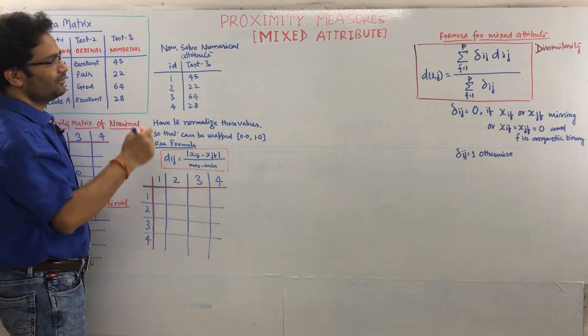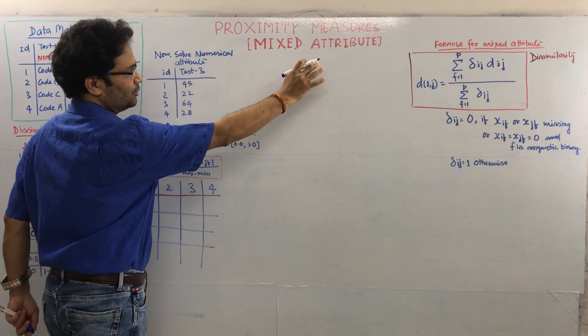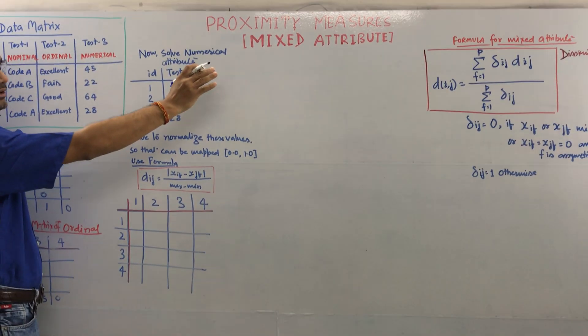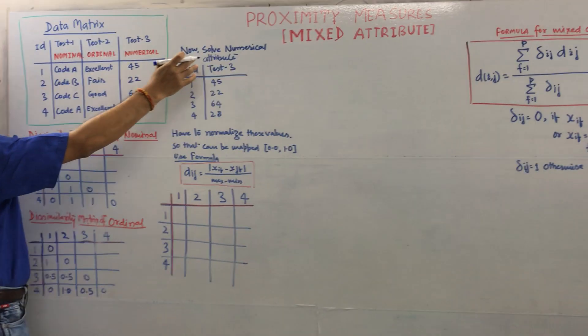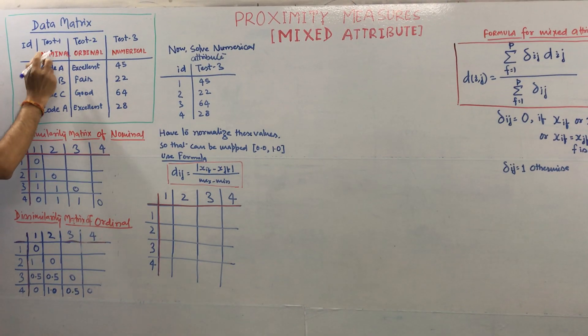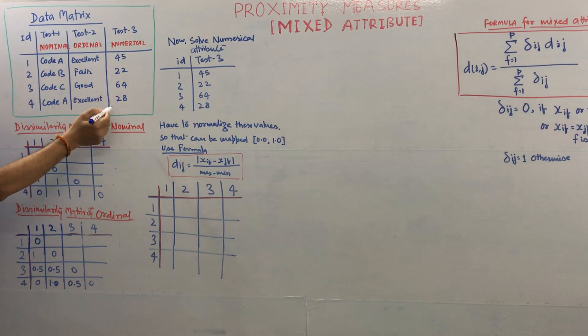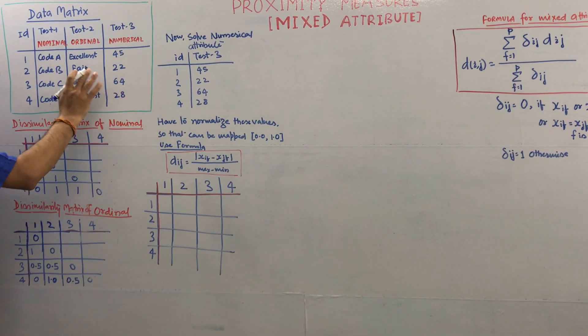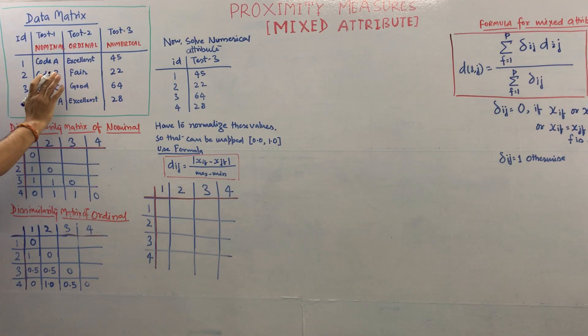In this video we are going to find proximity measure for mixed attributes when data has been given with different kinds of mixed attributes. We can see this data matrix which has nominal data, ordinal data, and numerical data. Now we have to find out the proximity measure or similarity for this given data set.